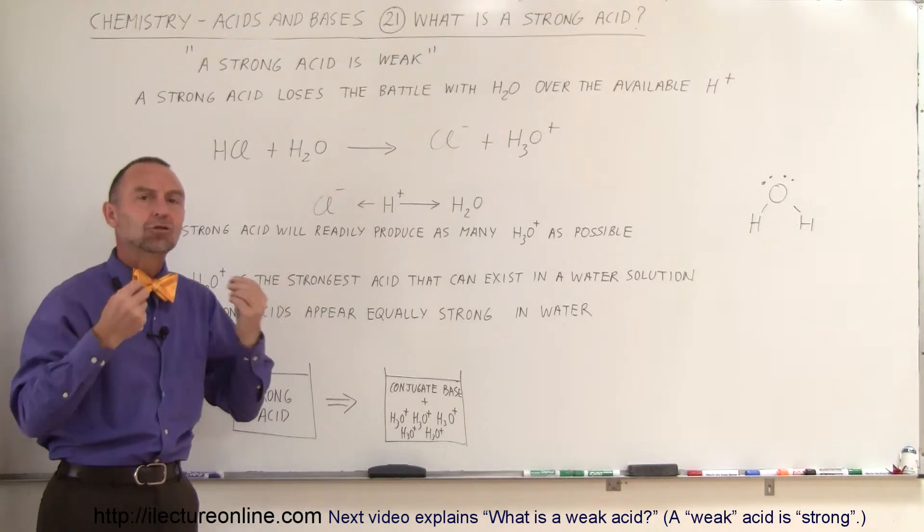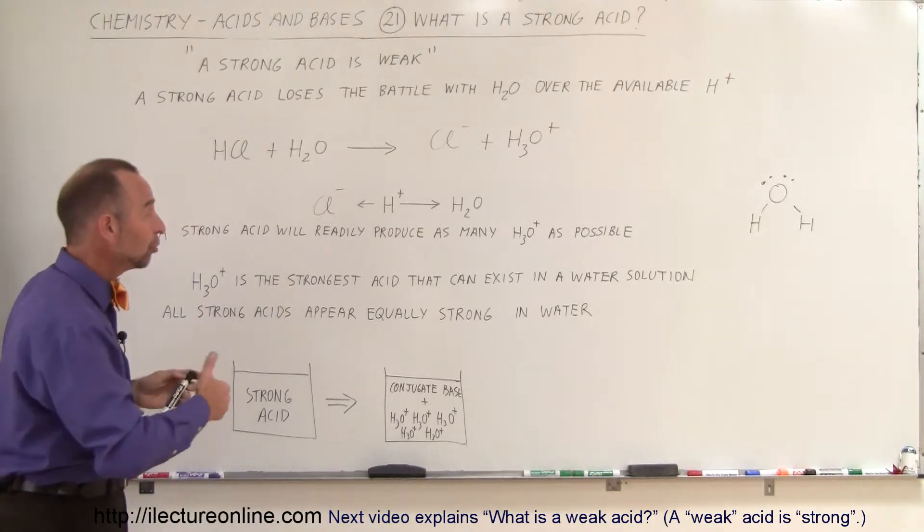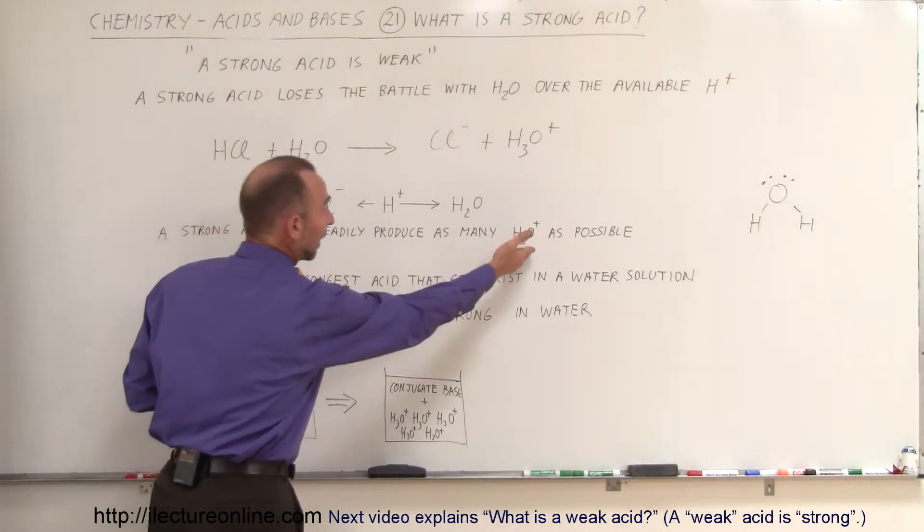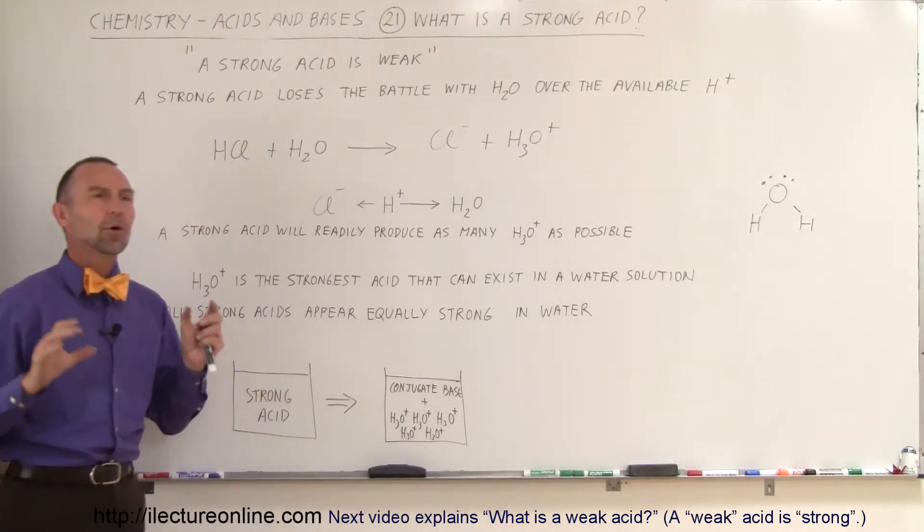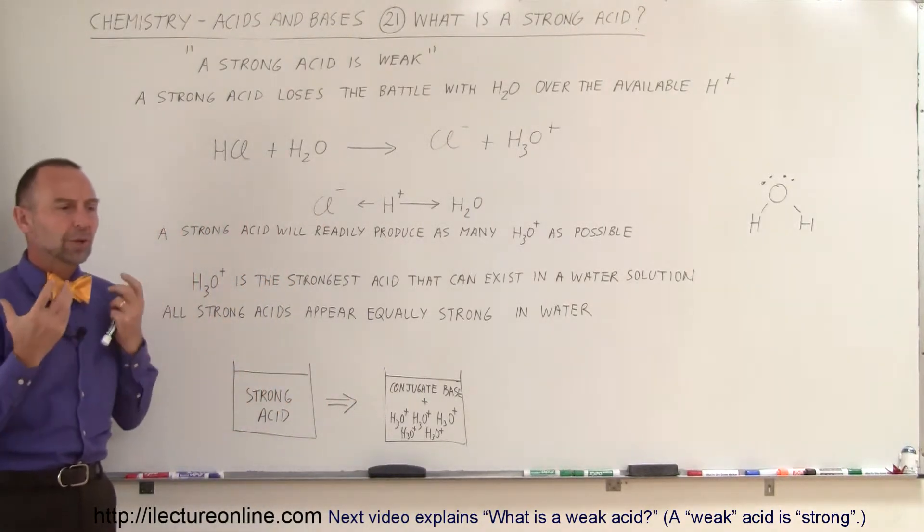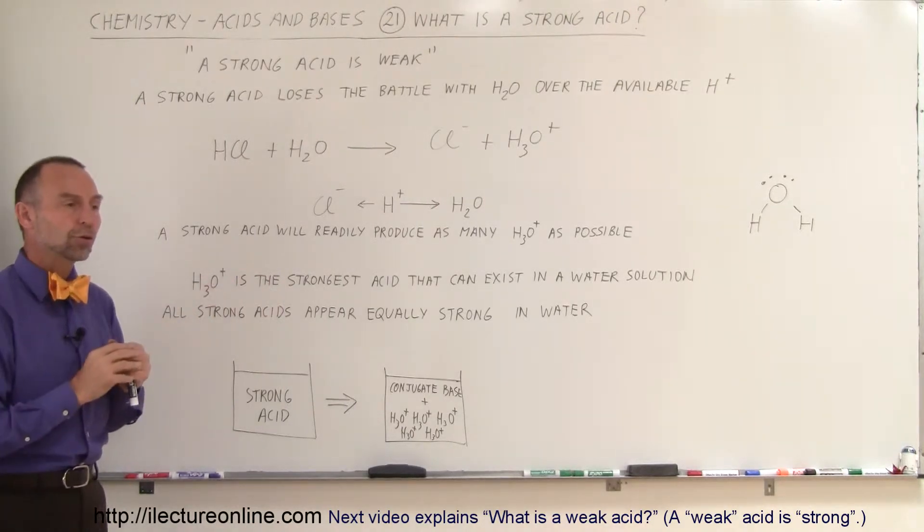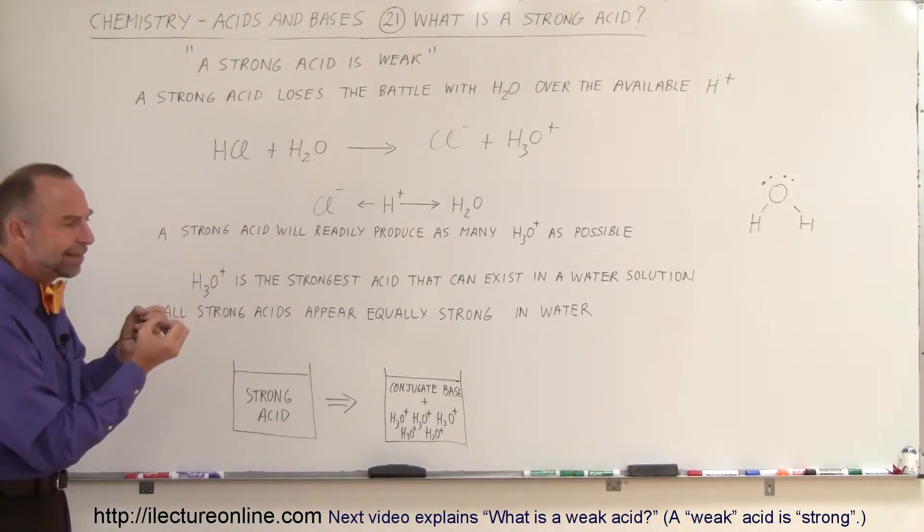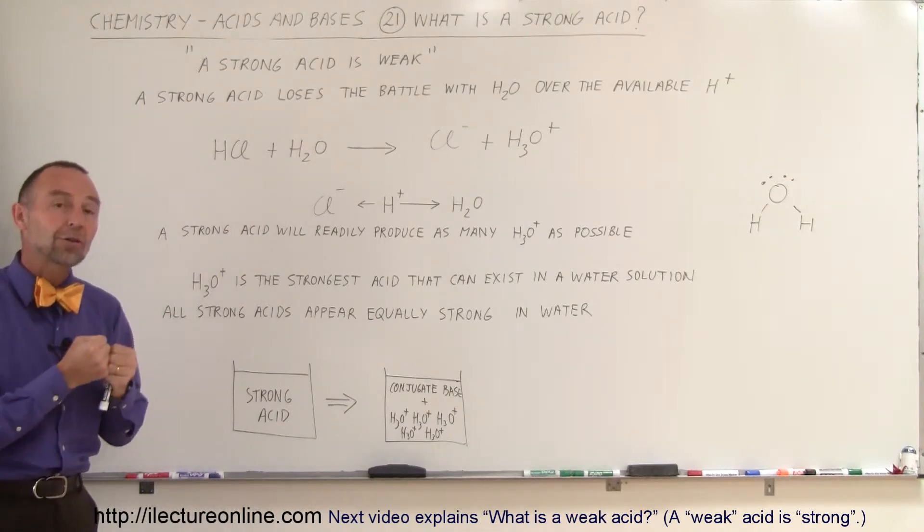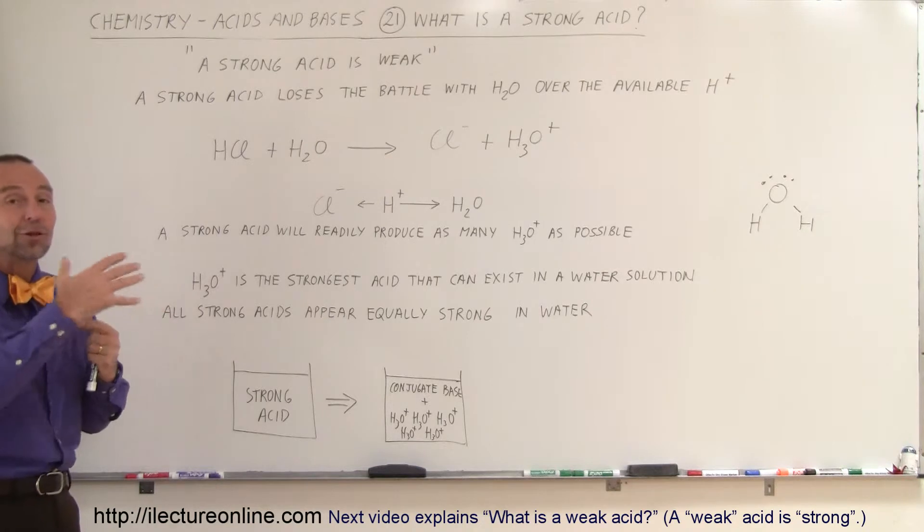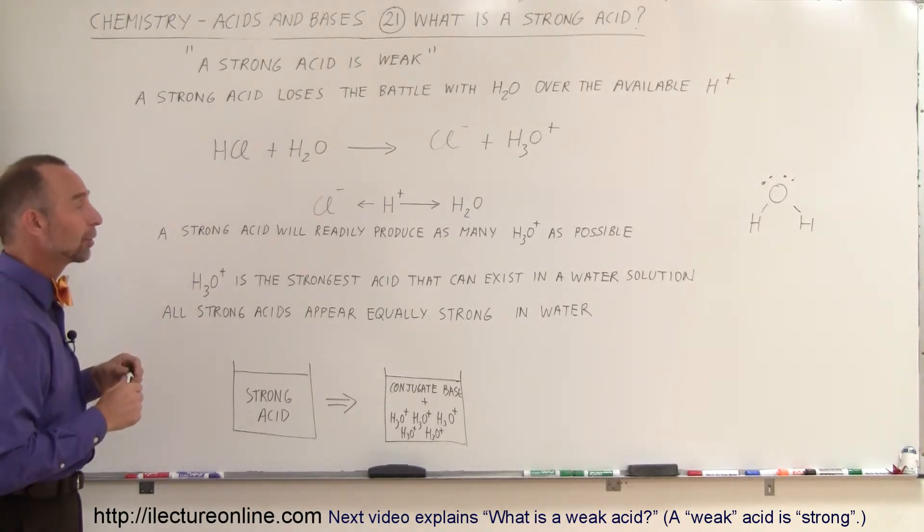We call that a strong acid because it produces as many hydronium ions as possible. So from a theoretical perspective, we can say strong acids are those acids that readily donate their hydrogen ion and produce hydronium ions, but yet in the physical sense, they're not very strong at holding on to those hydrogen ions, so therefore they lose the tug of war, they lose the fight with the water molecules.